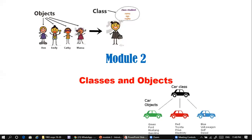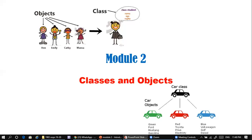Another example: cars can be of any model, but all cars have some common properties. These common properties are derived from the car class. Depending on the manufacturer, they add special details — making it either a Ford car, a Toyota car, or a Volkswagen car.